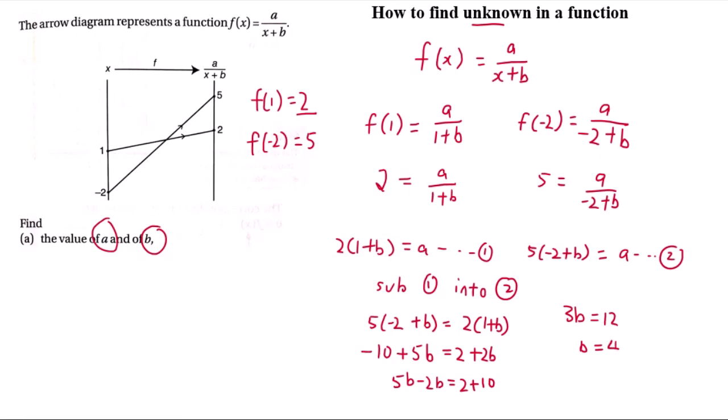So once you get b equal to 4, substitute back into your original equation. 1 plus 4 equal to a. So a is 2 times 5 and you will get 10. So this is how you find unknowns in a function.